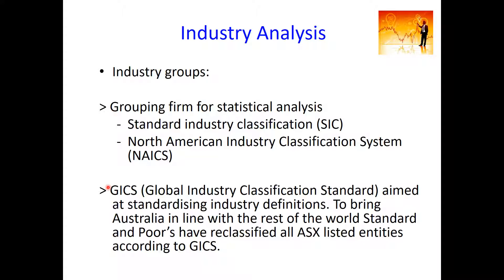For example, if you take a particular firm like Commonwealth Bank or BHP Billiton, you can look up the GICS code and find out what industry those firms belong to. If you want more information about this, you can visit the ASX — Australian Stock Exchange — website, where you will get more detail on this.